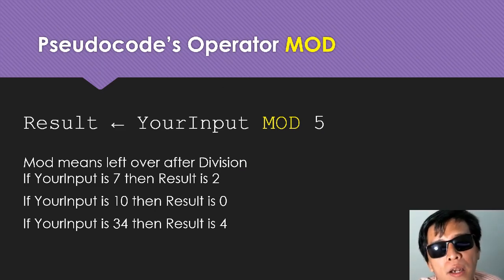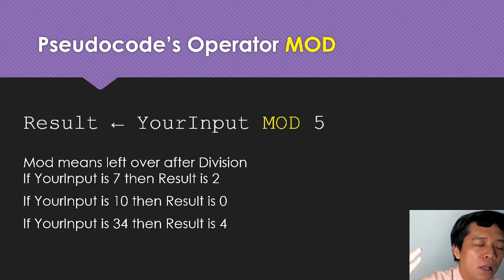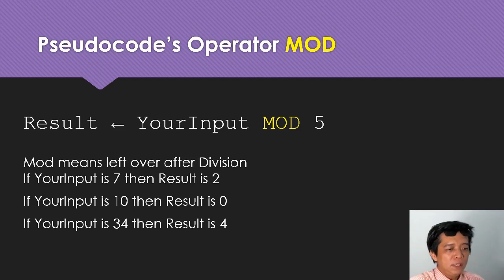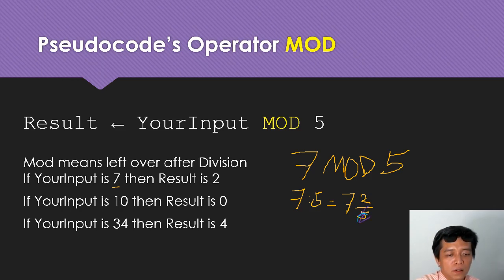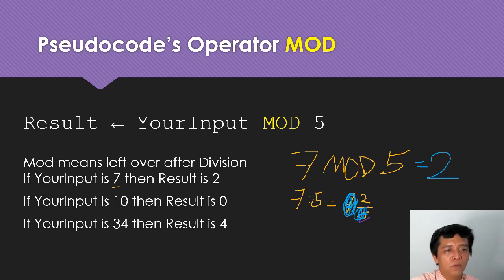The second one is MOD. What is MOD? For me it's just leftovers - the remainder. For example, 7 MOD 5: seven divided by five gives 1 remainder 2, so the leftover is 2. Therefore 7 MOD 5 is 2. I hope you get what MOD means.